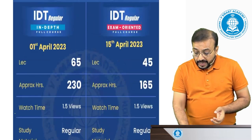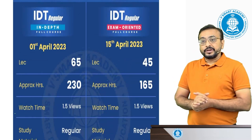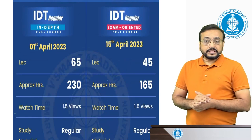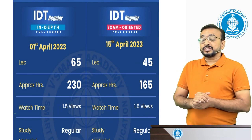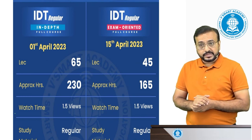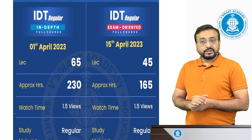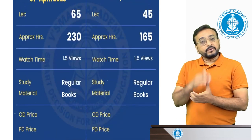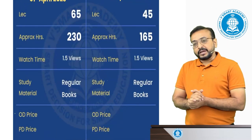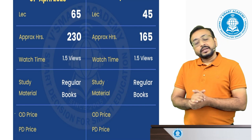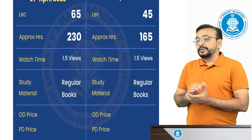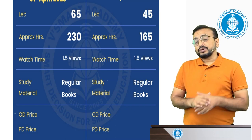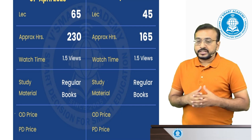The IDT Regular Exam Oriented Full Course starts 15th April 2023. The total number of lectures is 45 lectures, approximately 165 hours. Watch time is 1.5 times. Validity is unlimited. The study material is the same: regular modules, questionnaires, chart books, and wall charts.